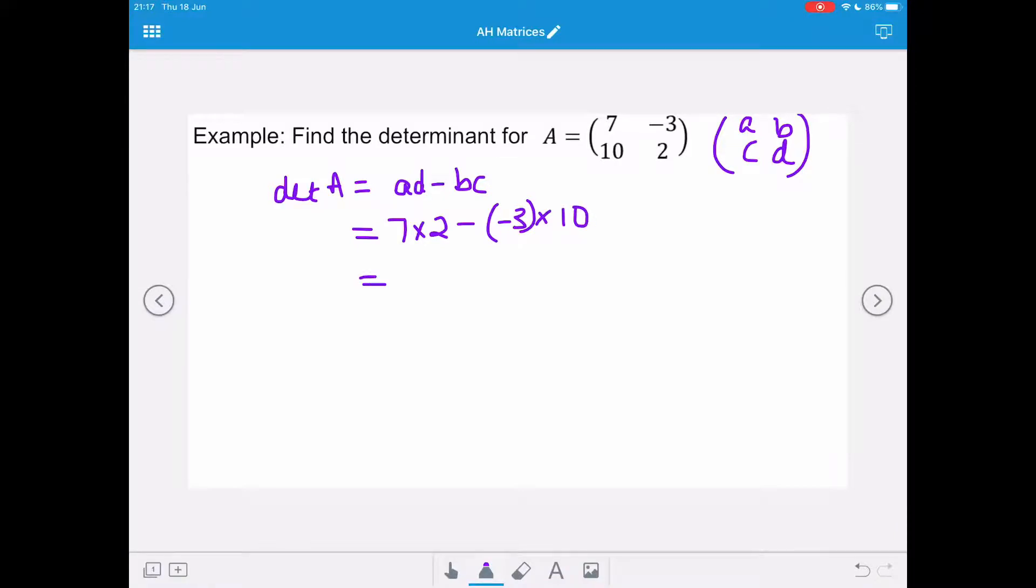Now, using BODMAS, we're going to end up with 14 plus 30, which gives us a determinant of A of 44 for this matrix.